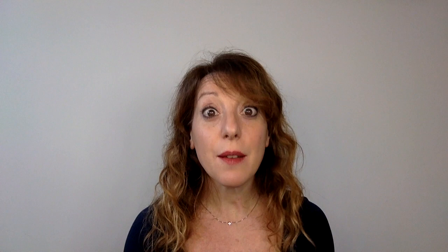Question 4: How many clefs are there in music? Seven — like the note names: Do, Re, Mi, Fa, Sol, La, Si — or A, B, C, D, E, F, G. Seven notes and seven clefs.